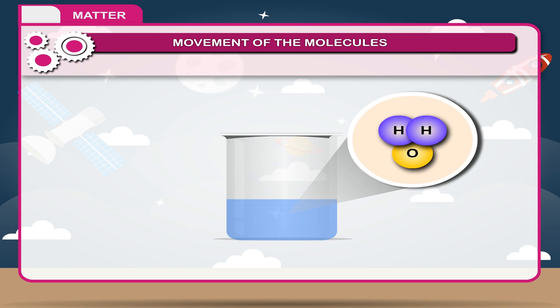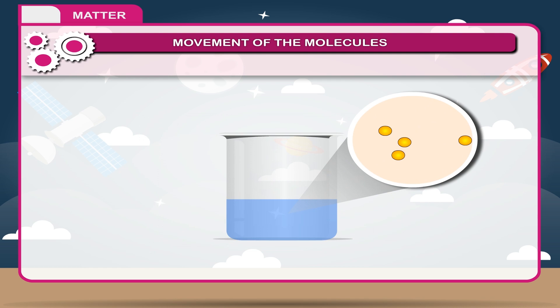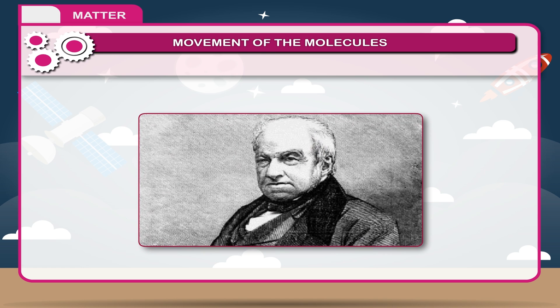Although the molecules of a matter are too small to be seen with the help of a powerful microscope, yet they are always in a state of continuous motion. The random movement of particles of a substance in a fluid was discovered by Robert Brown and known as Brownian movement.